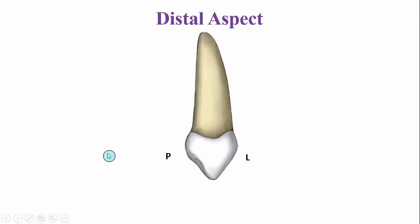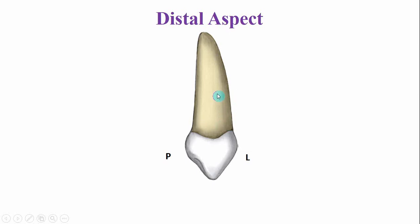From the distal side, the curvature of the cervical line is less compared to the curvature present on the mesial side. The root is bulky, but the greater bulk of the root is near the cervical area and in the middle portion.